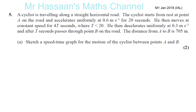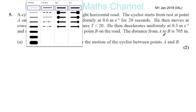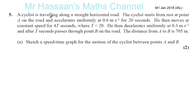M1 from January 2018 IAL paper, a question about speed-time graphs. A cyclist is traveling along a straight horizontal road. The cyclist starts from rest at point A and accelerates uniformly at 0.6 meters per second squared for 20 seconds. He then moves at a constant speed for 4T seconds, where T is less than 20. He then decelerates uniformly at 0.3 meters per second squared and after T seconds passes through point B on the road. The distance from A to B is 705 meters. Sketch a speed-time graph for the motion of the cyclist between points A and B.